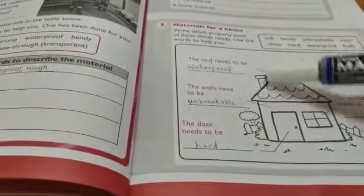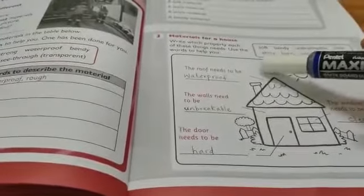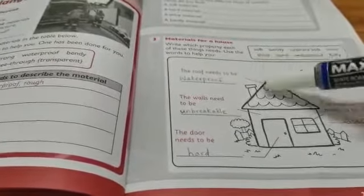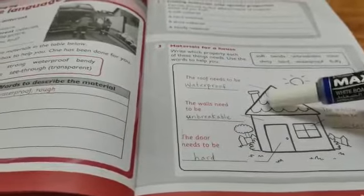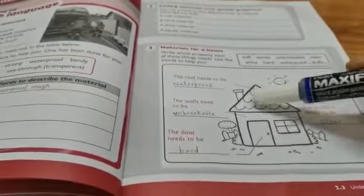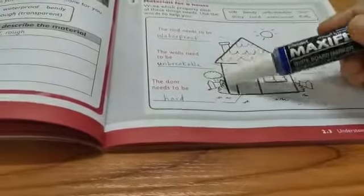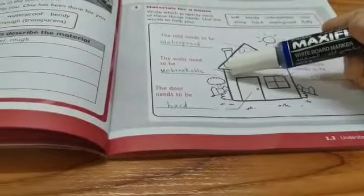Waterproof means the water will not get inside. If it's rainy, the water will not get inside from this roof. So that's called waterproof. The roof must be waterproof.